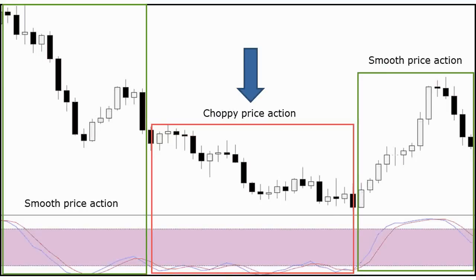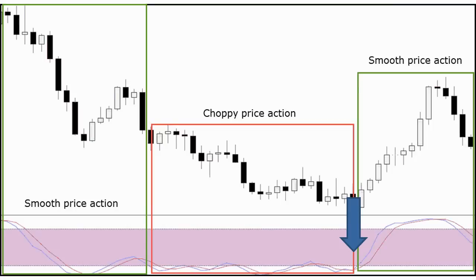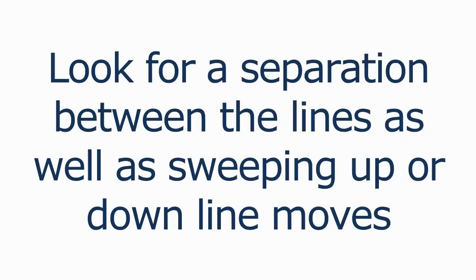Trading in chop — the red area shows the stochastics slow and fast lines really tight together with many crosses of each line. Look at the price action during this time; it shows a market where the bulls and the bears are almost in an equal battle. This may be a time where you sit on your hands, or depending on your trading plan, look at a different time frame combination to trade. Once the fast line crosses up and over the slow line, we can objectively state that we are in a momentum uptrend. Look for separation between the lines, as well as sweeping up or down moves of the stochastics, to indicate a trend quality conducive to better trading opportunities.